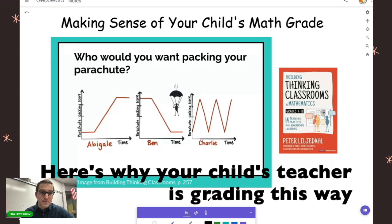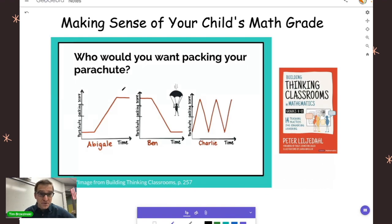I want you to look at this situation right here. You're going to go skydiving three weeks from now, and you get to choose who packs your parachute. We have three people: Abigail, Ben, and Charlie, and each of them has earned a parachute packing score, as you can see. Time goes on for each of these people. If you get to choose in three weeks who packs your parachute, who would you pick?